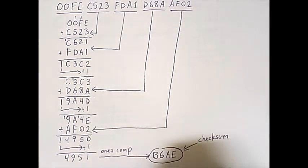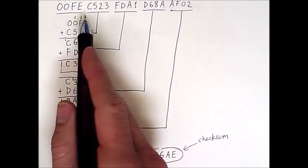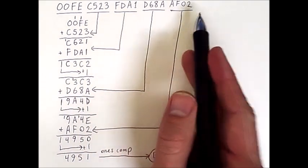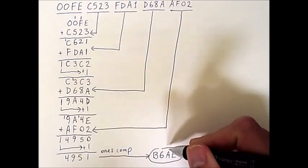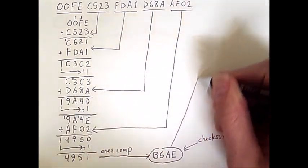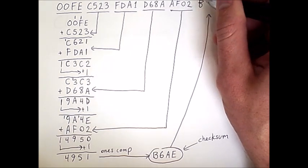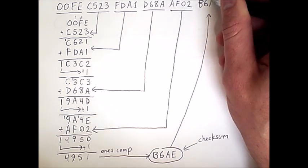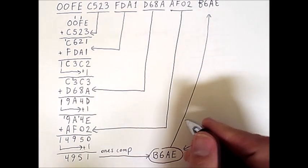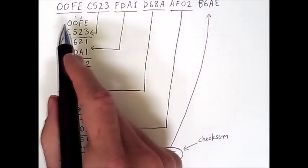So the sender will take this checksum and the original sequence of values it wants to send, and it will simply add this checksum to the end of the sequence of hex values that it is transmitting. And so this here is the complete message that will be transmitted by the sender.